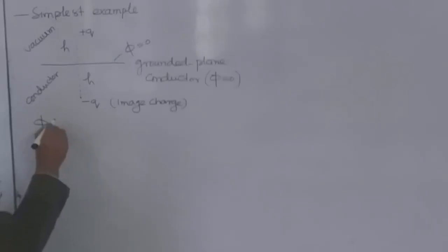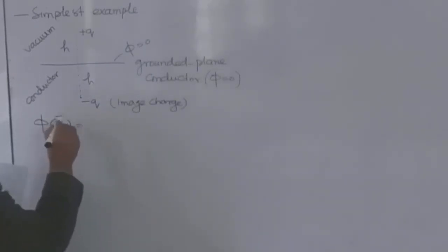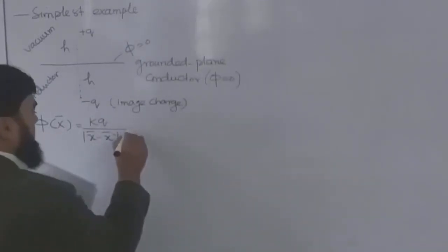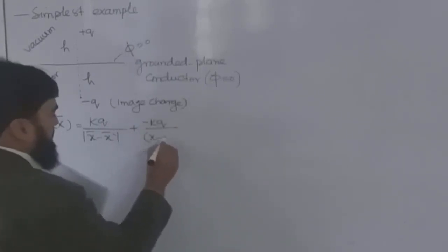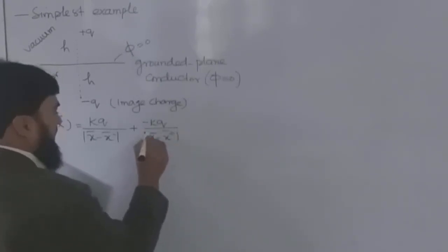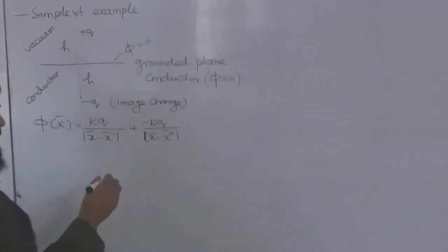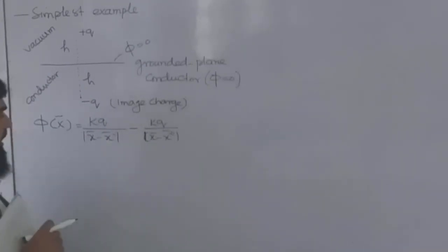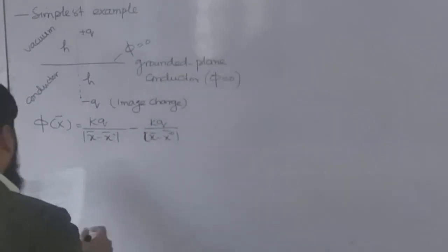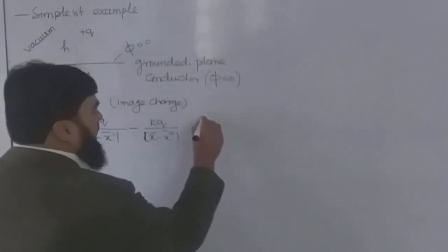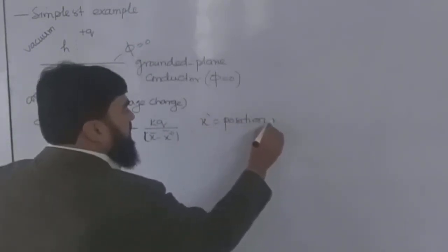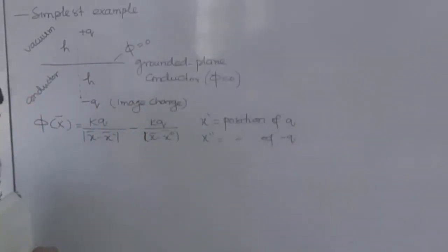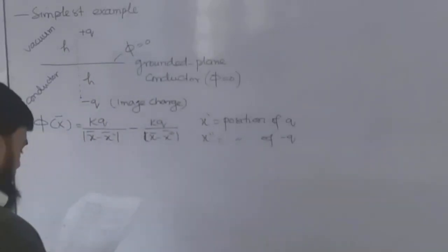The potential phi(x) will be equal to KQ over |x − x′| minus KQ over |x − x″|, where x′ is the position of the source charge and x″ is the position of the image charge minus Q. Both charges are at the same height and have the same magnitude.